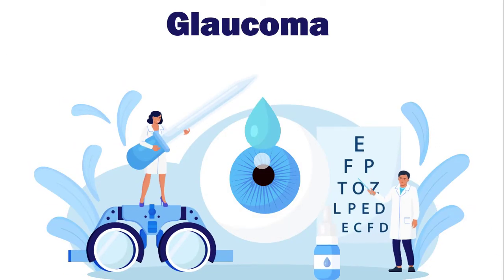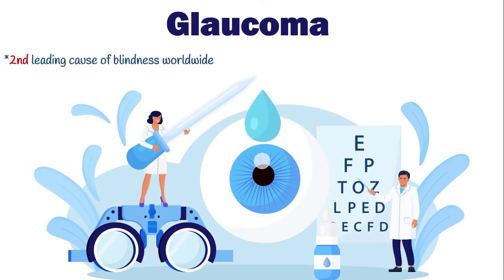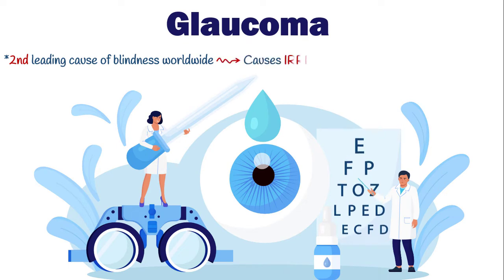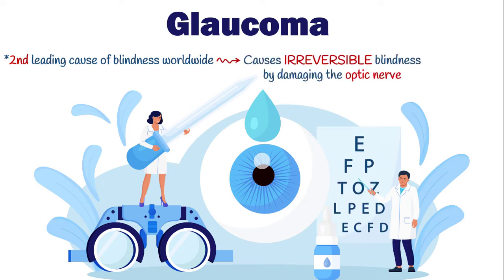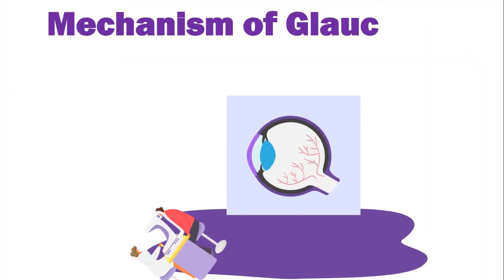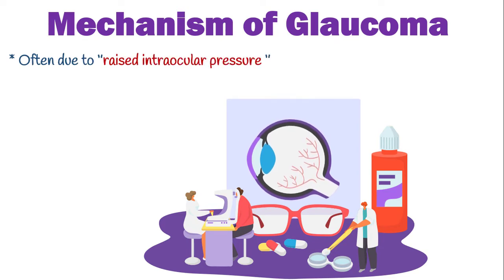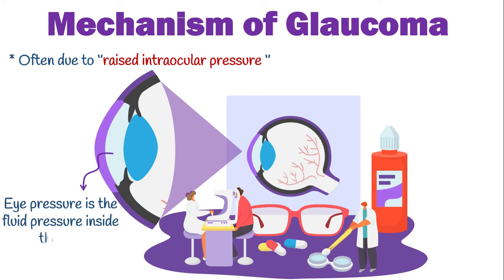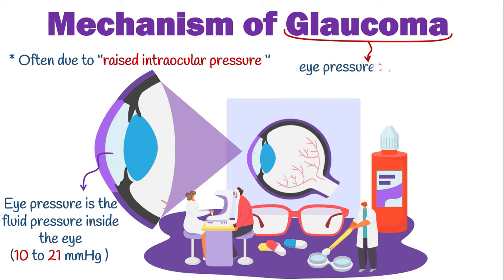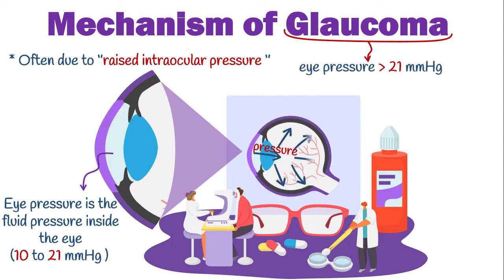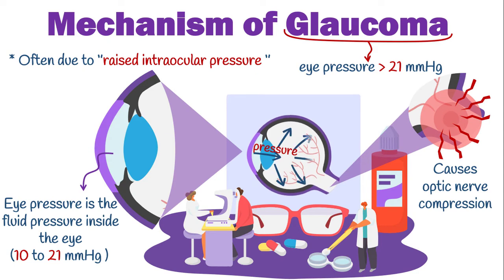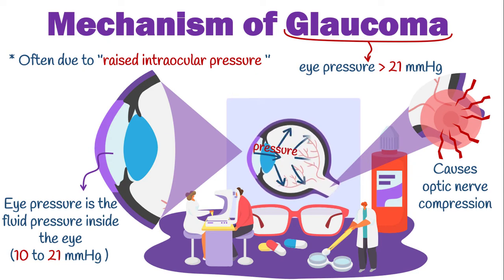After cataracts, glaucoma is the second leading cause of blindness worldwide. Unlike cataracts, glaucoma causes irreversible blindness by damaging the optic nerve. Although the exact mechanism of optic nerve damage is not fully understood, in most clinical cases raised intraocular pressure is the problem. Eye pressure is the fluid pressure inside the eye, averaging from 10 to 21 millimeters of mercury. During glaucoma, eye pressure usually becomes greater than 21, causing optic nerve compression and decreased ocular blood supply. Over time, these changes lead to atrophy of the optic nerve head and erode a patient's eyesight.